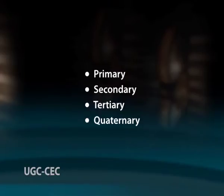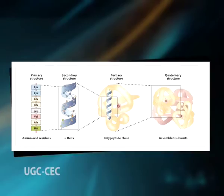The primary structure concerns the amino acid sequence of a protein, whereas the later three levels concern the organization of the molecule in space. Here we can see a schematic representation of primary, secondary, tertiary, and quaternary structure of proteins.